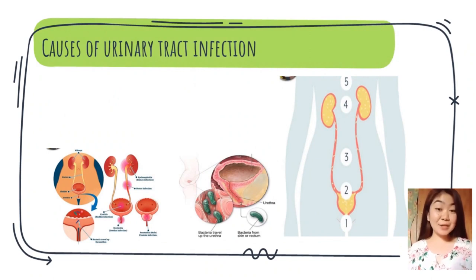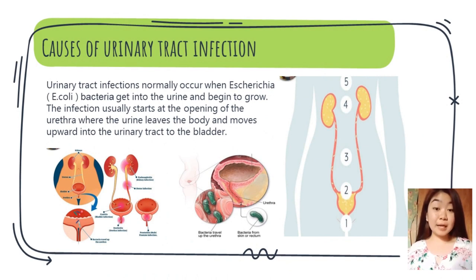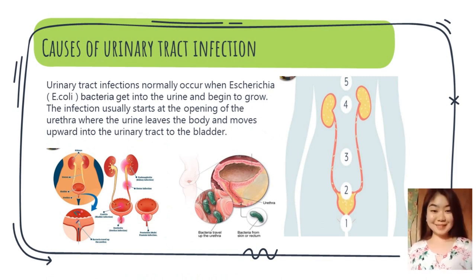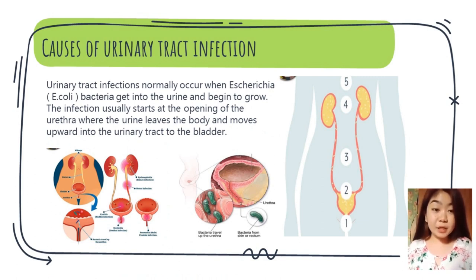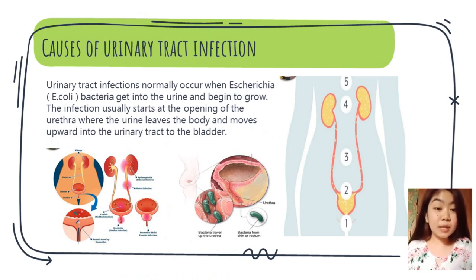Urinary tract infections normally occur when E. coli bacteria get into the urine and begin to grow. The infection usually starts at the opening of the urethra where urine leaves the body and moves upward into the urinary tract to the bladder. Because E. coli can move easily from the area around the anus to the opening of the urethra, the bacteria thrive. If the infection isn't treated immediately, it can quickly infect the kidneys, causing a kidney diagnosis.